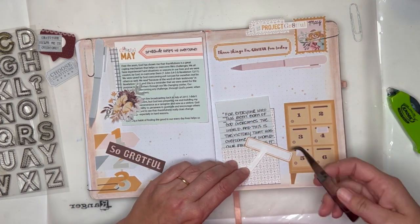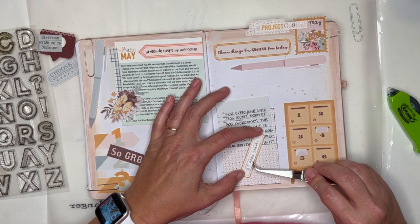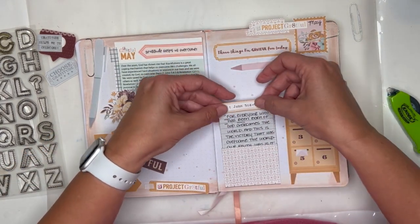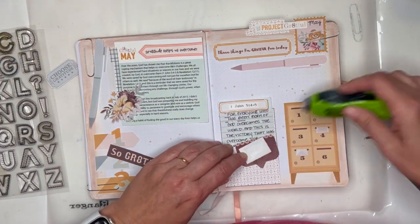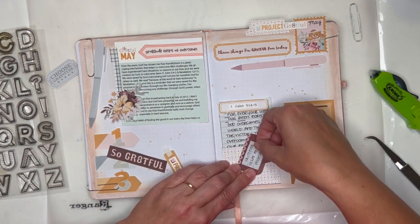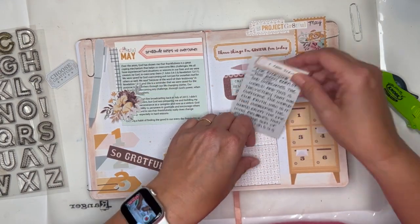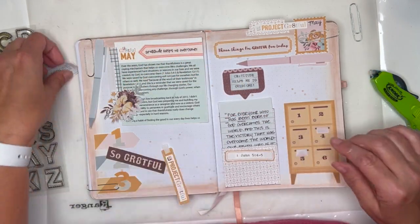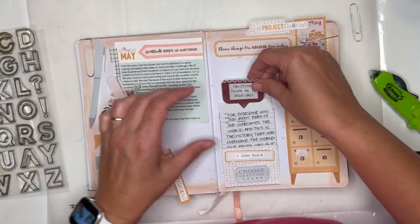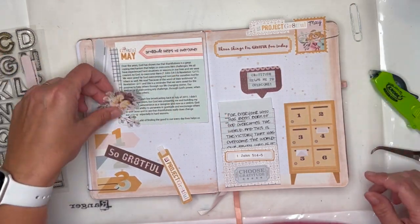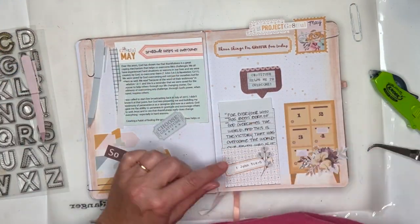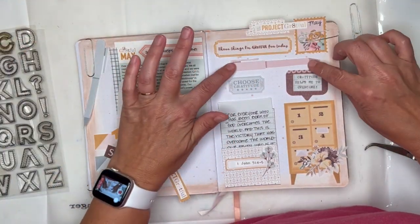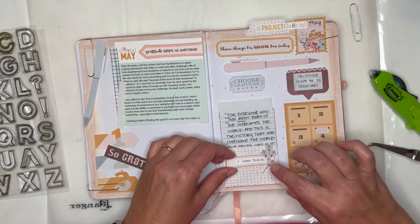Now I typed up on a tiny little piece of cardstock a strip that has the Bible verse. The verse that I chose is 1 John 5:4 and 5 because the whole theme of this month for gratitude is about how gratitude helps us overcome. It says, 'For everyone who has been born of God overcomes the world, and this is the victory that has overcome the world, our faith. Who is it that overcomes the world except the one who believes that Jesus is the son of God?'